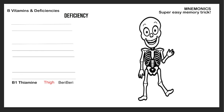The deficiency of thiamine is beriberi, so I put a couple of berries around the thigh region — that's how I remember thiamine. Beriberi is an inflammation of the nerves. There's wet and dry beriberi: wet beriberi affects the heart, and dry beriberi affects the nerves. You can add drawings to help remember those symptoms for your boards.